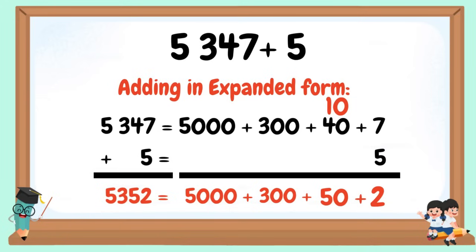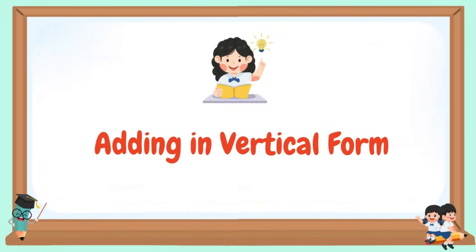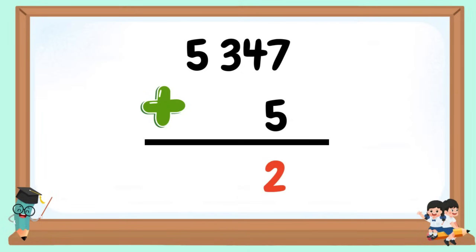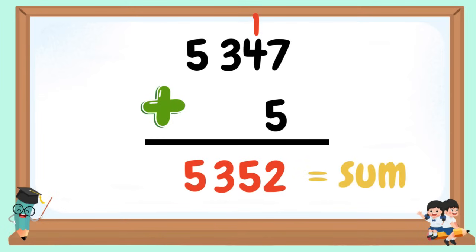This is our sum or our answer. Adding in vertical form: 5,347 + 5. 5 + 7 = 12. Bring down 2, carry 1. 1 + 4 = 5. Our sum is 5,352.